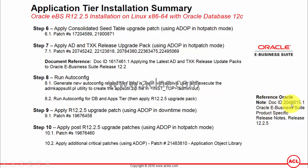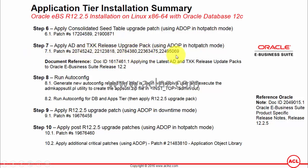After applying those patches, move on to applying the ADN TXK Release Update Pack using the ADOP utility in hot patch mode. This includes three to five patches for a new installation environment. Oracle has released a specific document with ID 1617461.1 relating to applying the latest ADN TXK Release Update Packs to Oracle E-Business Suite Release 12.2.